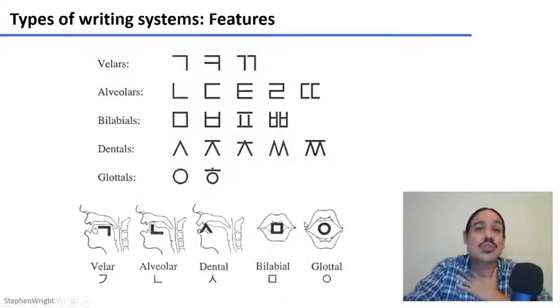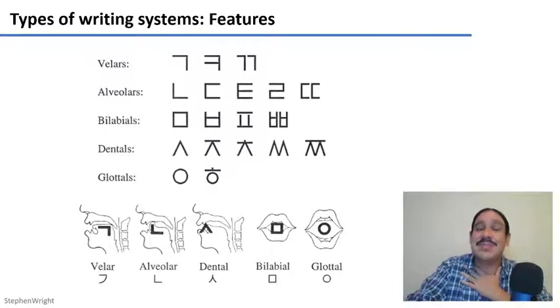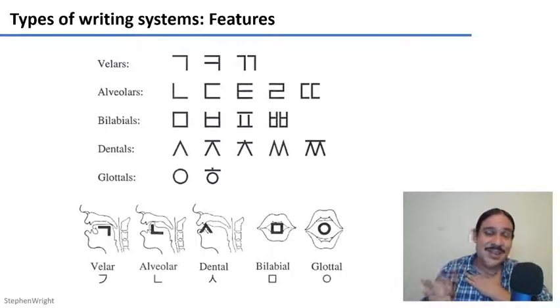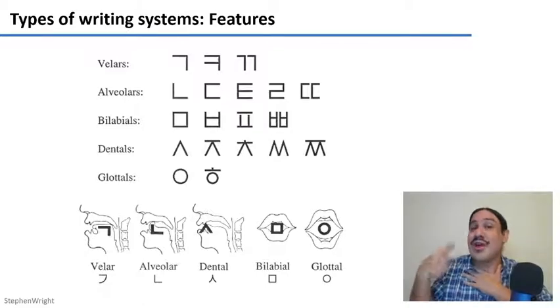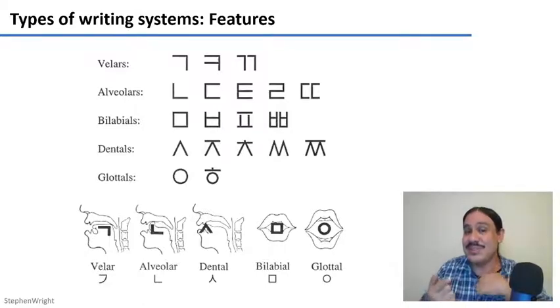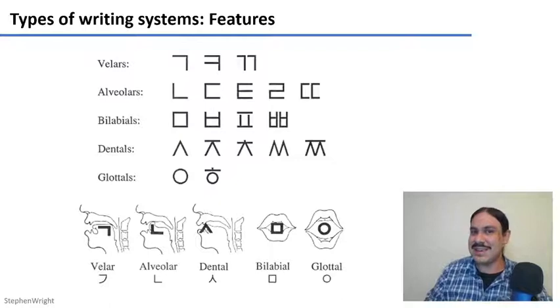Our letters in English don't do this. Our letters 'A' and 'B' were originally — as covered in the last video — pictures of an ox and a house that have undergone a lot of transformation. They don't have anything to do with what our tongue is doing when we say 'A' and 'B'.